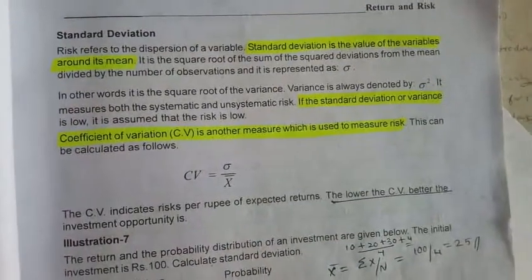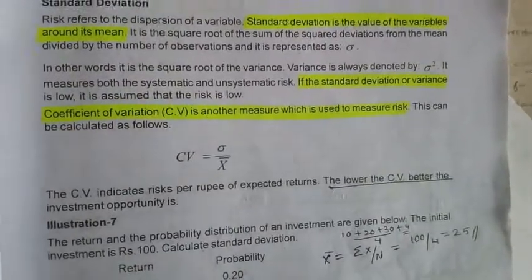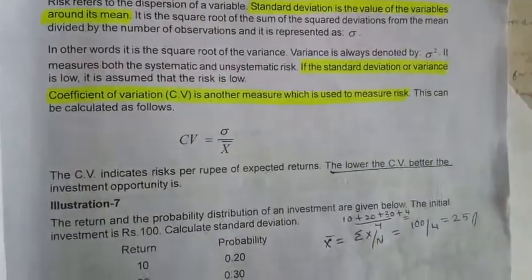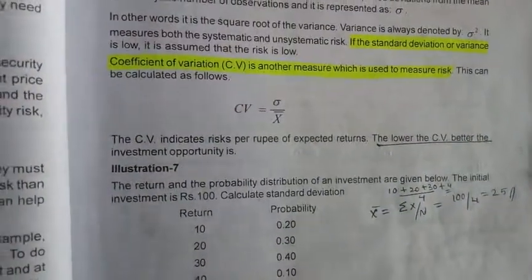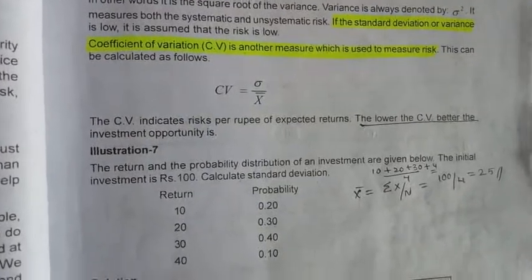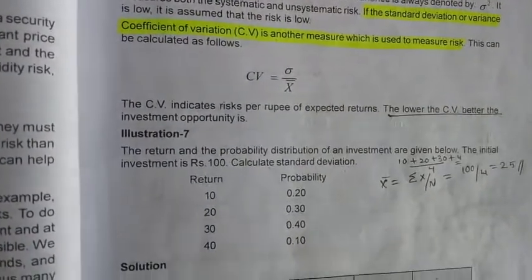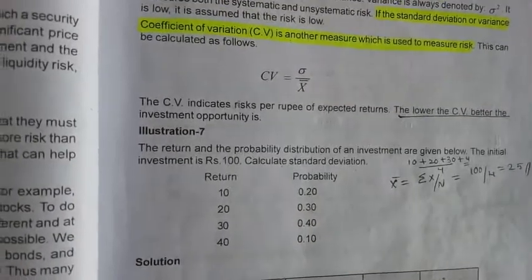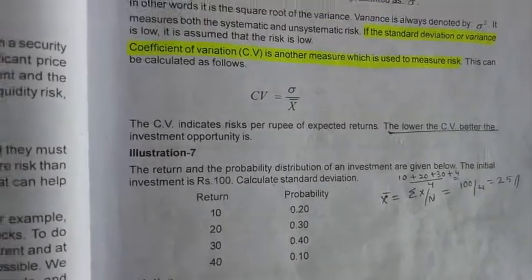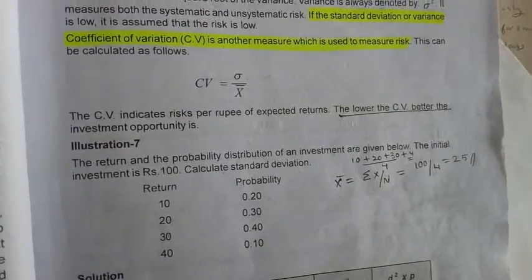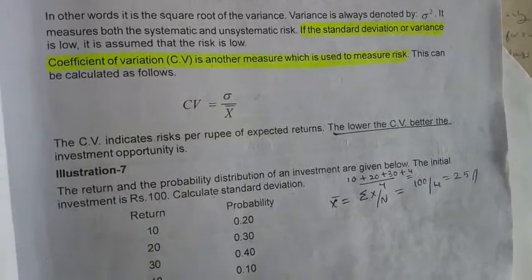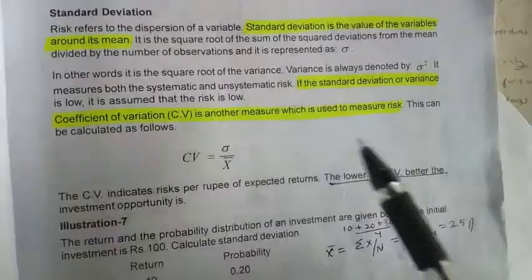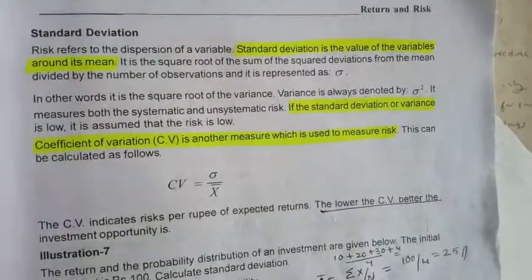The measurement of risk is standard deviation. The measurement of the mean is the average. We are going to share the value and the return of the share. We are going to look at the average mean and assess the risk.